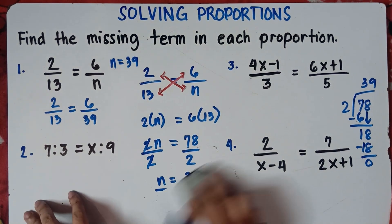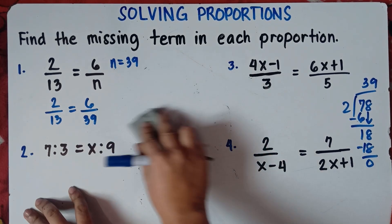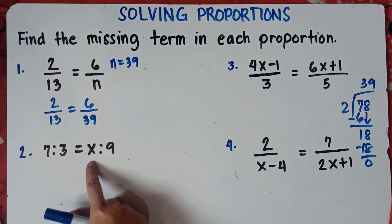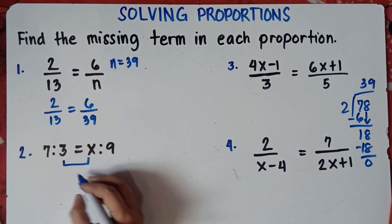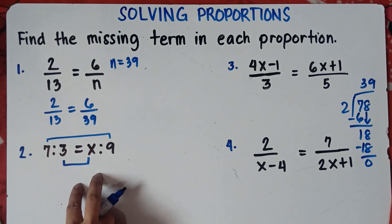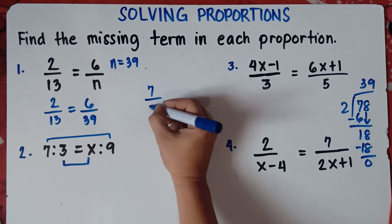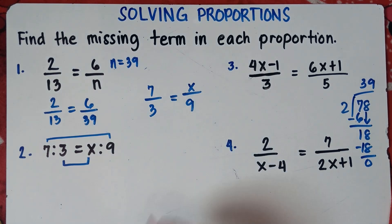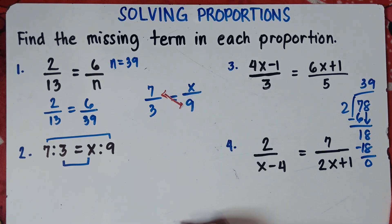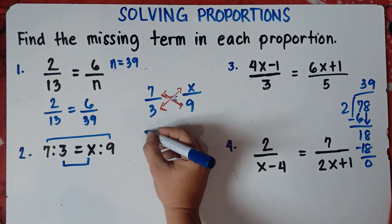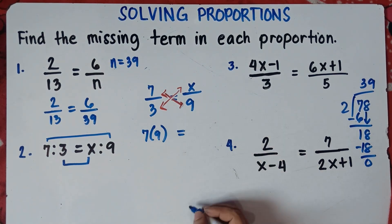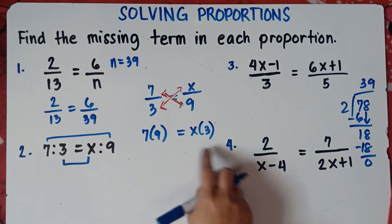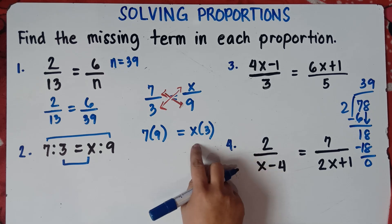Let's try number two. Now, what if the given question is in colon form? We have 7 is to 3 equals x is to 9. This part gives us the means and the extremes. To answer this, we write it in fraction form: 7 over 3 equals x over 9. Then we do cross multiplication — multiply 7 times 9 and 3 times x.